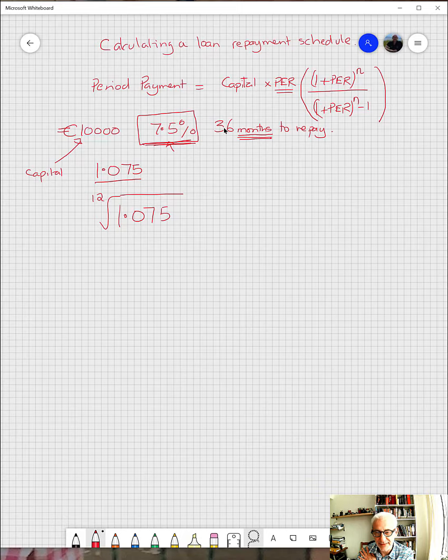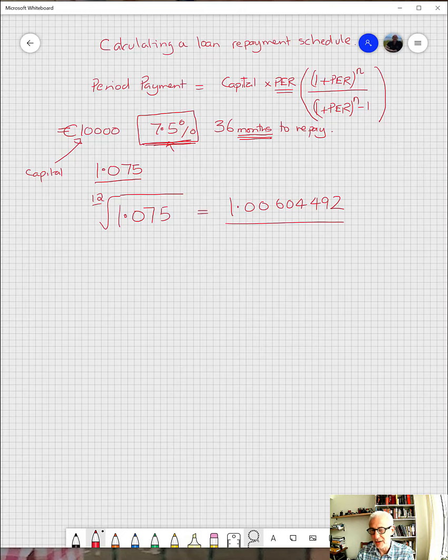So given an annual rate and paying monthly, you'd use 12 months in a year to actually work out what you were doing. If you put this into the calculator of your choice or work out by any method that you prefer, the answer that you get for that is 1.00604492.